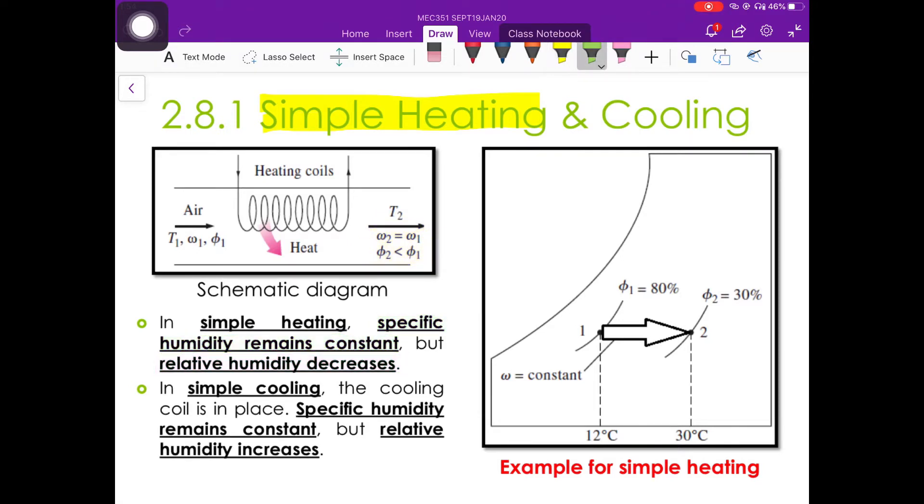If we draw the simple heating process on our psychometric chart, it will move from state one to the right to state two, horizontally. This scale represents the specific humidity omega. We now observe that the specific humidity at the first state is equal to the specific humidity at the second state.